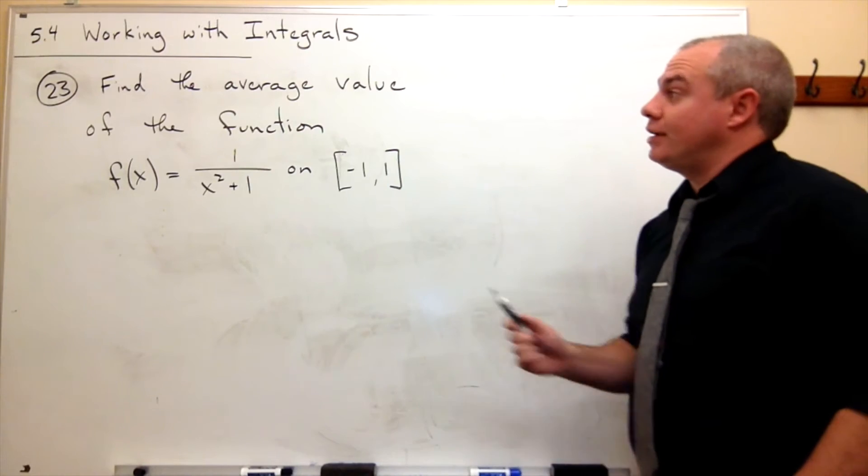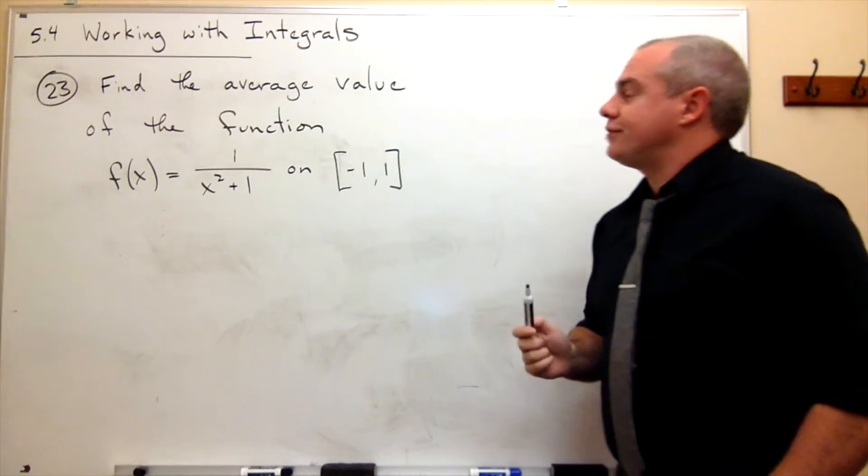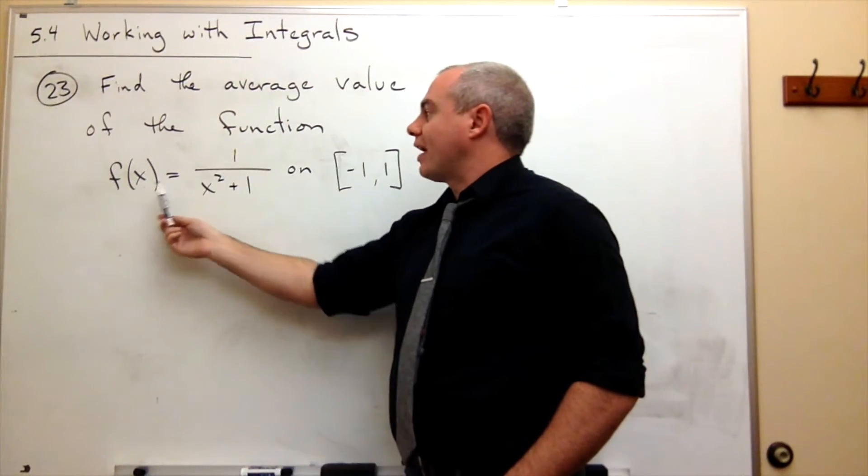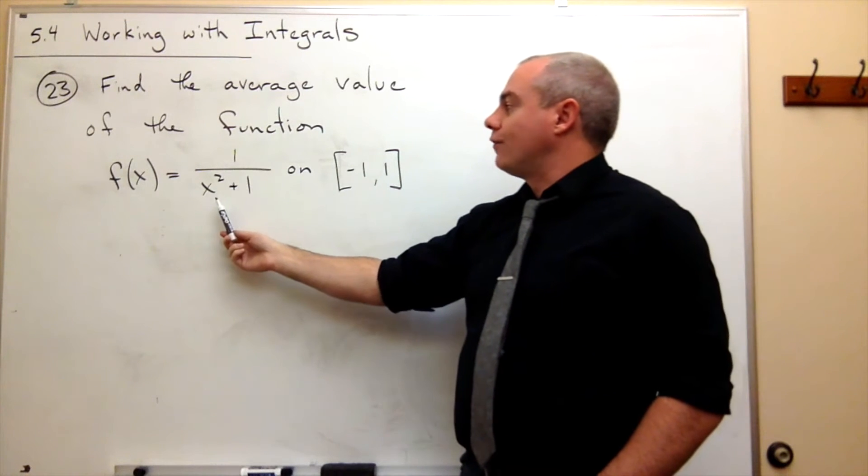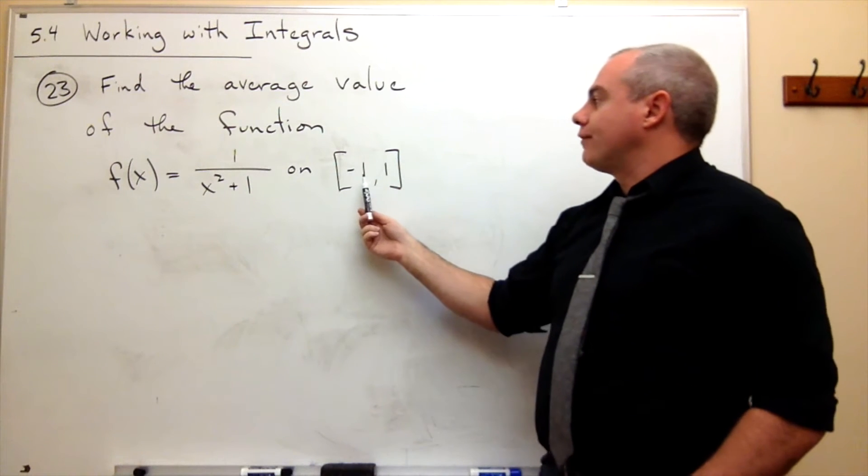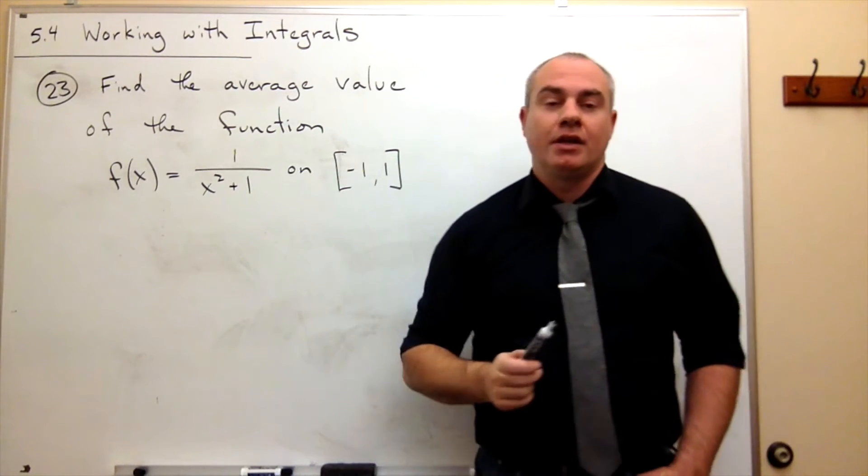In problem number 23, I'd like to find the average value of the function f of x equals 1 over x squared plus 1 on the interval from negative 1 to 1.